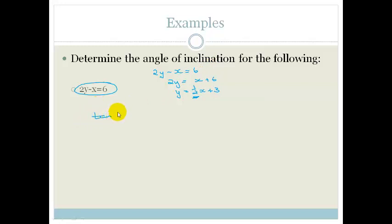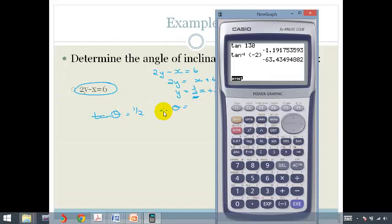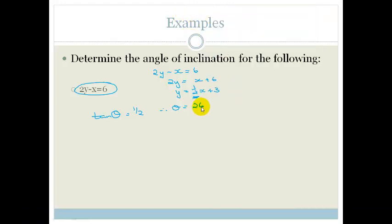So we've got tan theta is a half. Therefore your theta is going to be shift tan of bracket 0.5 bracket equals 26.57 degrees. So that's going to be 26.57 degrees.